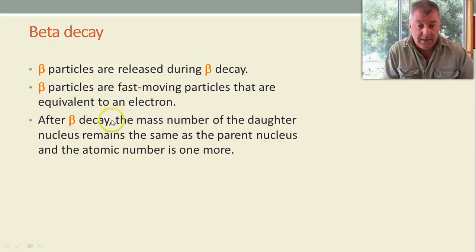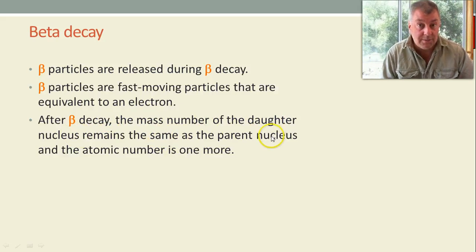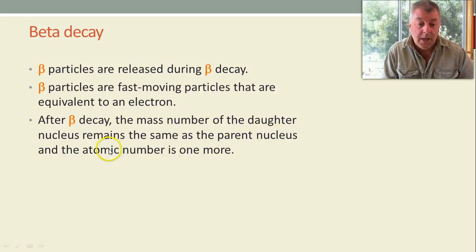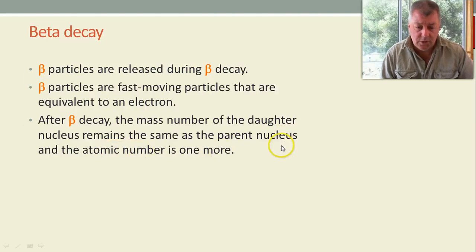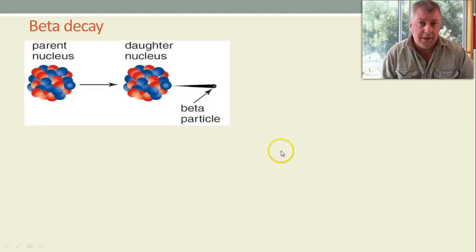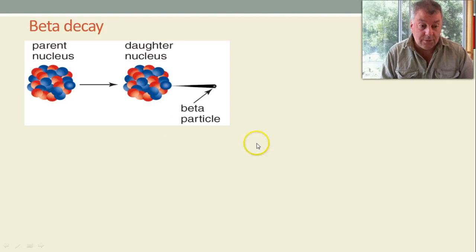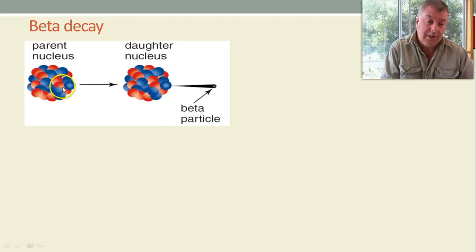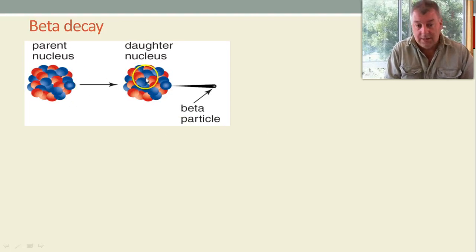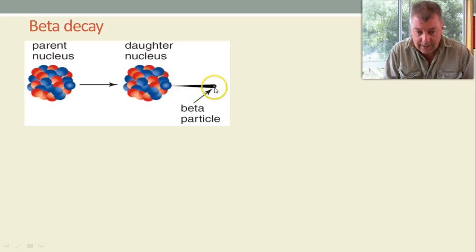After Beta Decay, the mass number of the daughter nucleus remains the same as the parent nucleus, so we don't change the mass number, but we increase the atomic number. That's in words, we'll look at it as an equation, but here's a figure. There's our parent nucleus, there's our daughter, and there's a tiny little Beta particle.